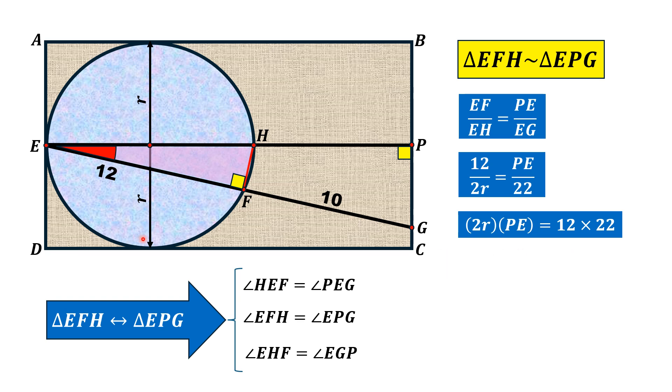2R is equal to the diameter of the circle and this is equal to the breadth side AD of the rectangle. So replacing 2R by AD and PE, PE is this length which is equal to the length of the rectangle. So this is equal to AD times AB which is equal to 264.